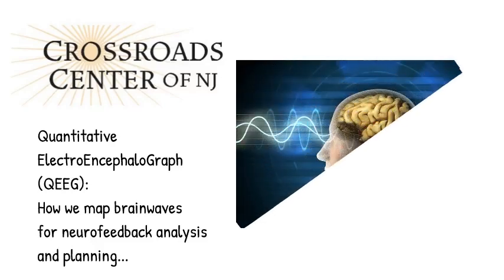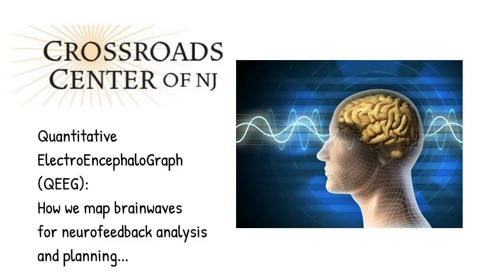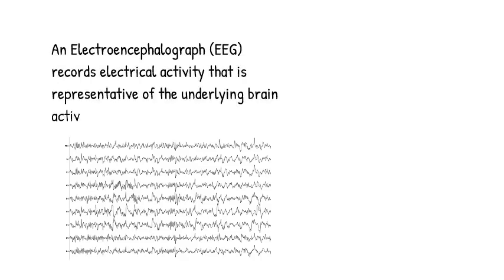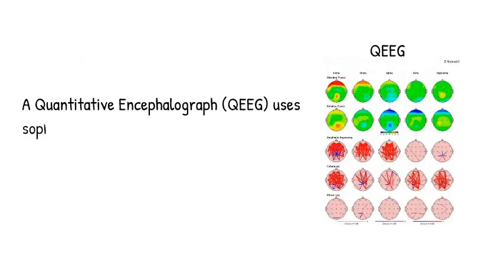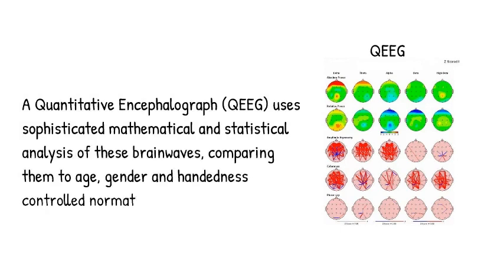The Crossroads Center of New Jersey utilizes the QEEG for neurofeedback and therapy analysis and planning. The EEG records electrical activity that is representative of the underlying brain activity. The quantitative EEG uses sophisticated mathematical and statistical analysis to compare brainwaves against normative databases.